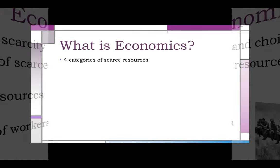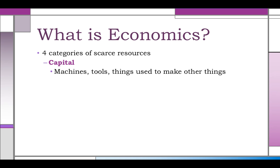The third category of scarce resource is capital. Capital, put quite simply, are the tools or machines used to produce other goods and services — scissors, tractors, assembly lines, computers, calculators. There's also something called human capital, which is the ideas and knowledge people acquire as they move through life, such as learning how to operate a machine or enter data in a spreadsheet.